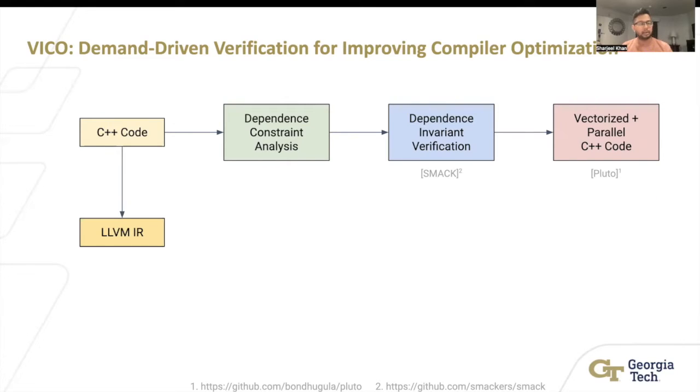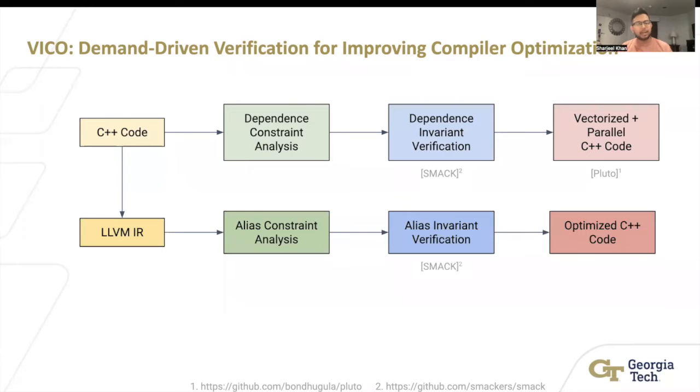The only difference is we begin from the LLVM IR. What we do is we use LLVM to give us some may alias cases. We make invariants of must alias and no alias, and let SMACK verify them if they're true. If they do, we feed them back into LLVM and add them to our own alias analysis pass and use that alias analysis pass so we can better optimize the code, leading to better register allocation and value numbering that could lead to better PRE reduction.